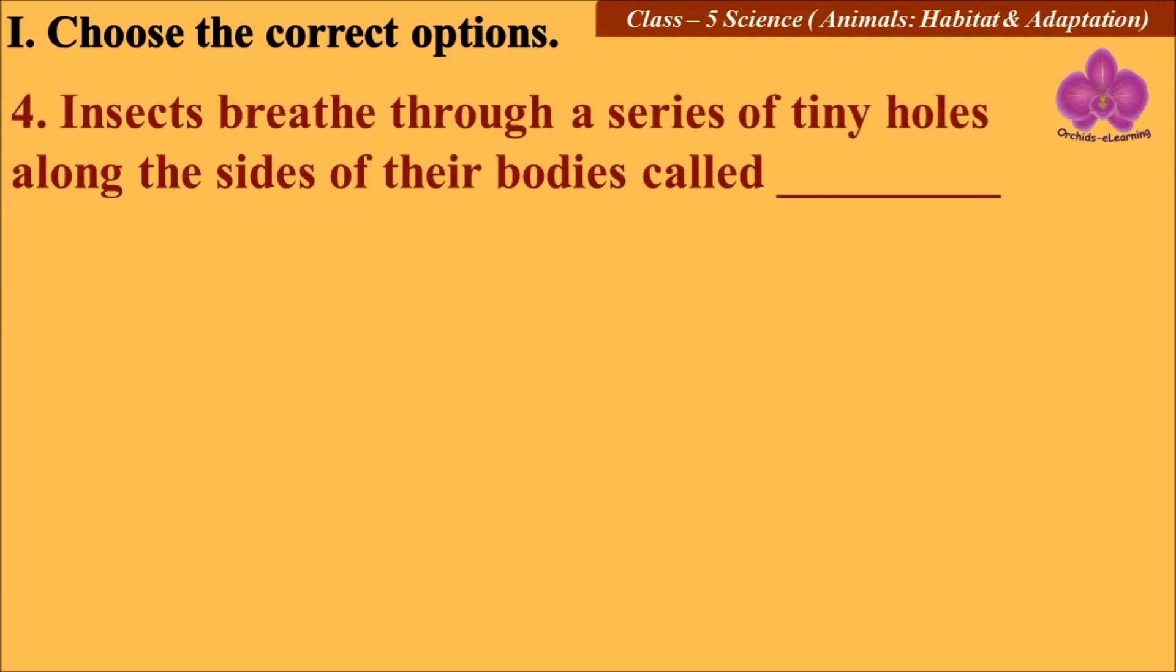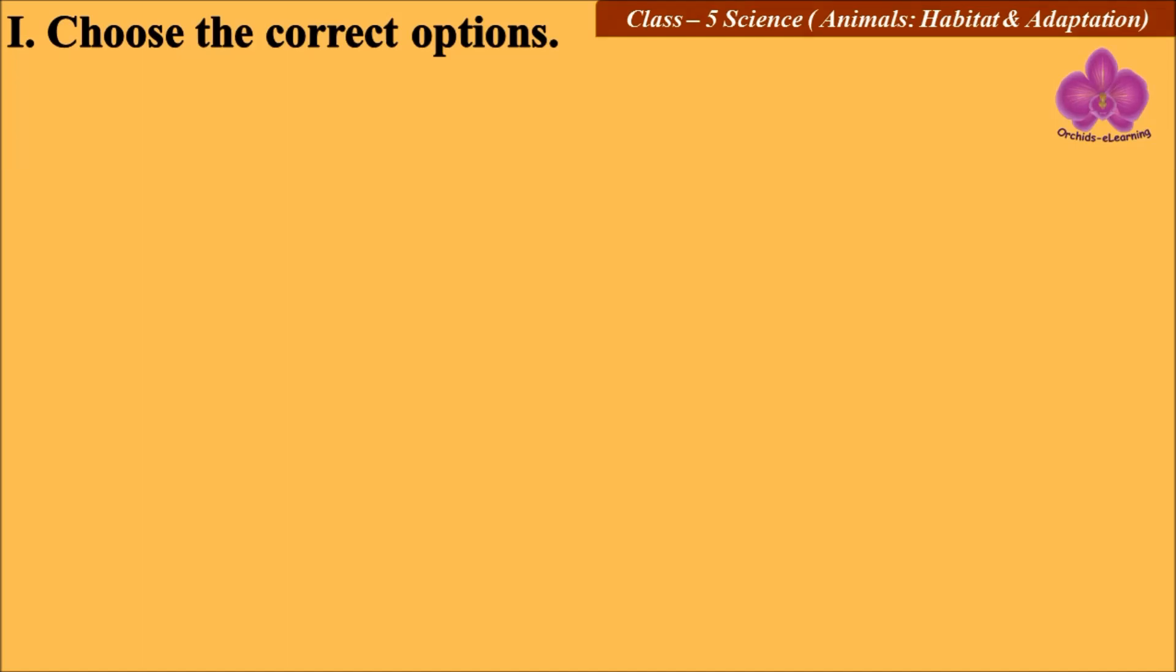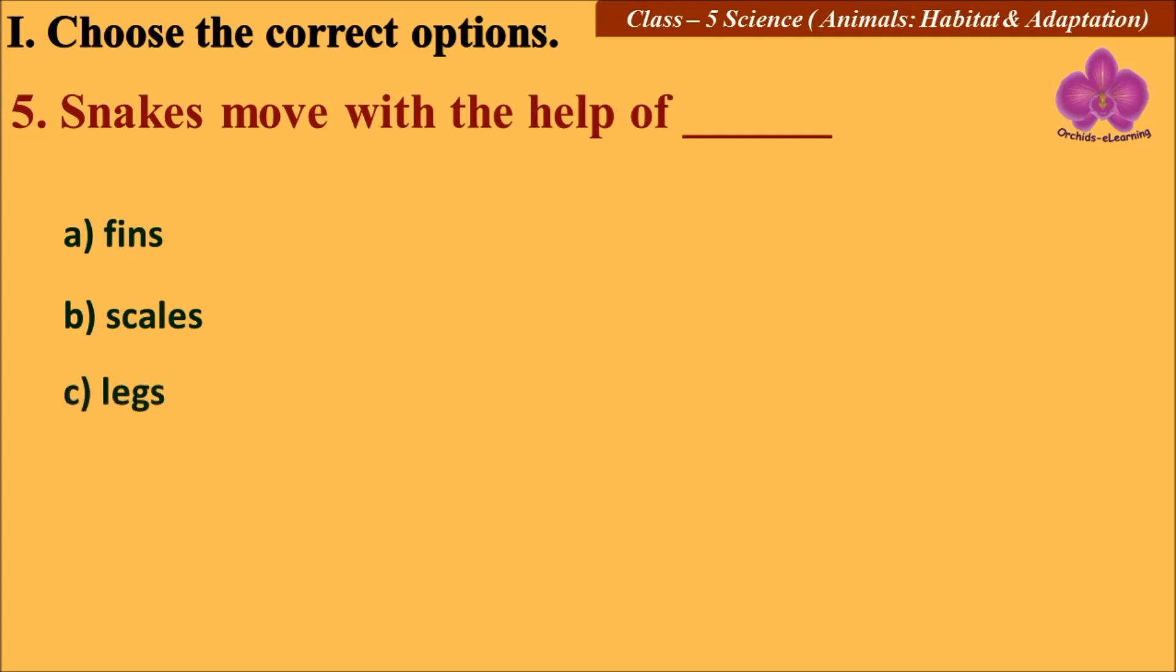Question four: Insects breathe through a series of tiny holes along the sides of their bodies called ____. Options: A) Gills, B) Scales, C) Spiracles, and D) Lungs. Answer: C) Spiracles.